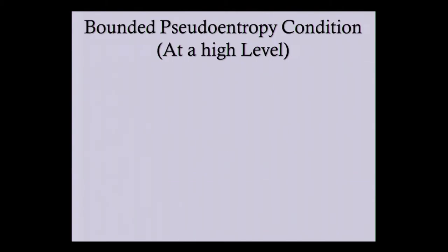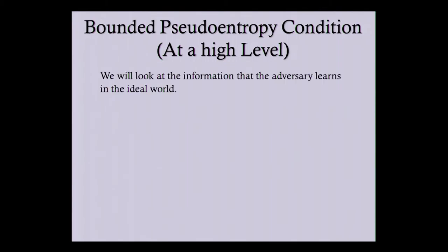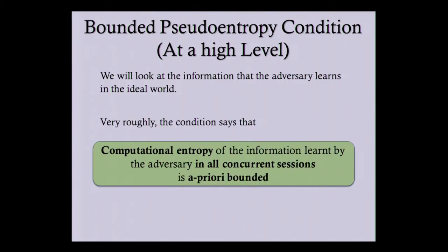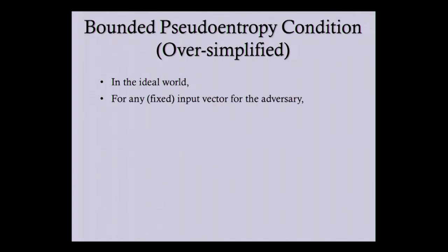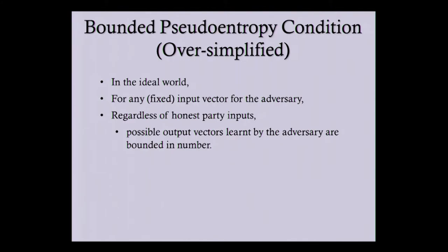Let me now describe the bounded pseudo-entropy condition for which we obtain our positive result. At a very high level, here we try to understand the information the adversary gets to learn in the ideal world. Very roughly, it says that the total computational entropy of the information learned by the adversary across all concurrent sessions via outputs from the trusted functionality is a priori bounded. In an oversimplified version: in the ideal world for any functionality, given some input vector for the adversary, regardless of the honest party inputs, the total number of possible output vectors the adversary can get from the trusted functionality is bounded in number.